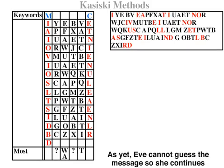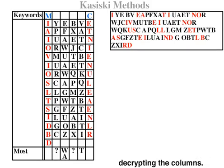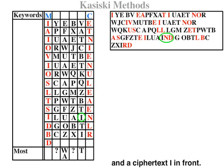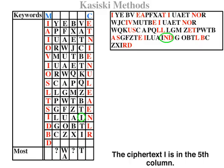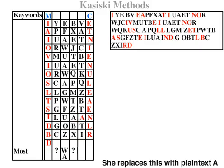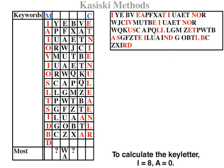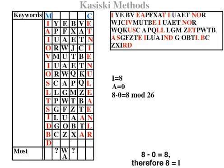As yet Eve cannot guess the message, so she continues decrypting the columns. She notices a three-letter word with two plaintext letters, N and D, and a ciphertext I in front. She believes this word to be AND. The ciphertext I is in the fifth column. She replaces it with the plaintext A, and all other I's in the column are changed too. To calculate the key letter: I equals 8, A equals 0, 8 minus 0 equals 8, therefore 8 is I. The key letter is I.